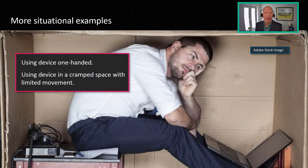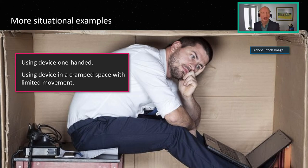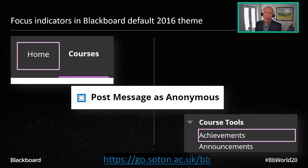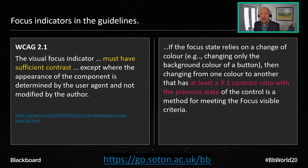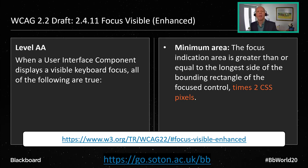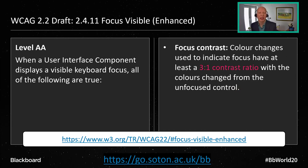You could be using a device one-handed — think of the new parent scenario — or be in a cramped space with no room to really use a mouse or even a trackpad. In Blackboard, in the default 2016 theme, this is what the focus indicators look like. In the guidelines, in WCAG 2.1 they're a little bit vague, but once you start digging in it does get more specific. More importantly, in the draft of WCAG 2.2, the main new area was much more detail about how we should be using focus indicators.